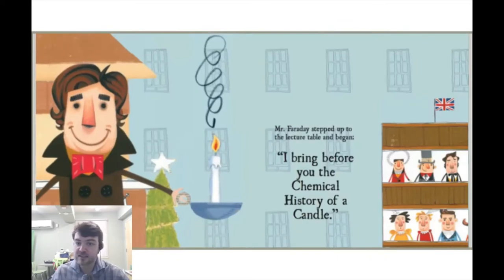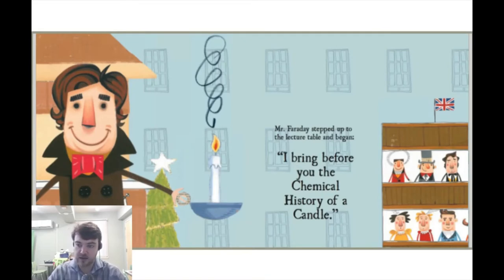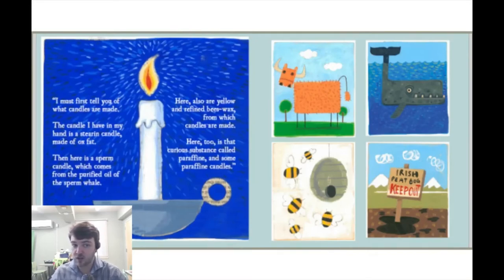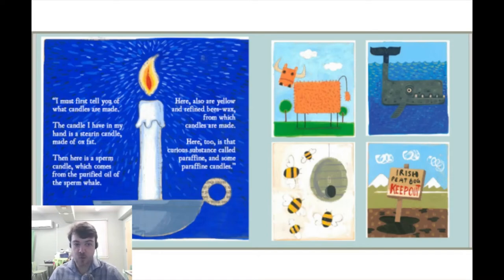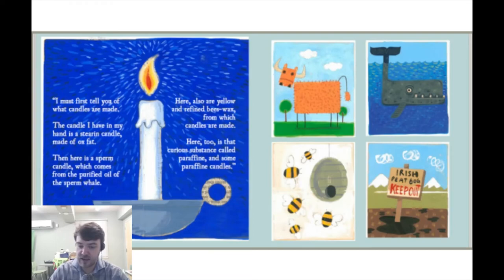Mr. Faraday stepped up to the lecture table and began, 'I bring before you the chemical history of a candle. I must first tell you of what candles are made. The candle I have in my hand is a stearin candle made of ox fat. Here is a sperm candle, which comes from the purified oil of the sperm whale. Here also are yellow and refined beeswax, from which candles are made. Here, too, is that curious substance called paraffin, and some paraffin candles.'